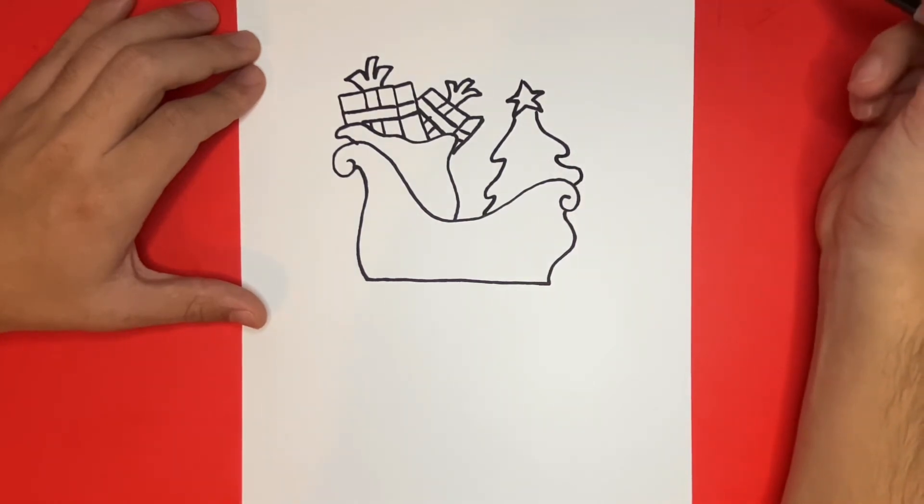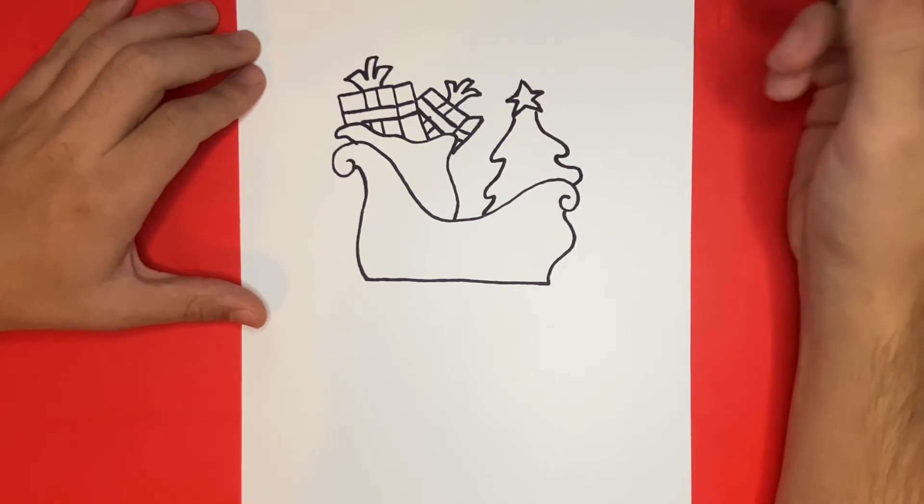Now we can add ornaments to our tree by using small circles. You can add a lot of ornaments or just a few if you want.